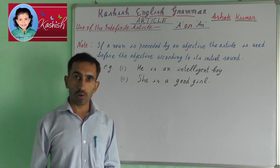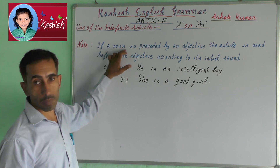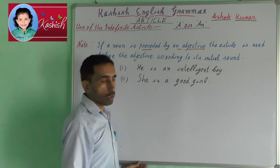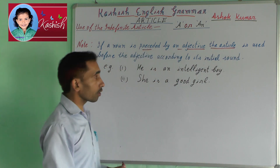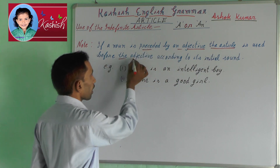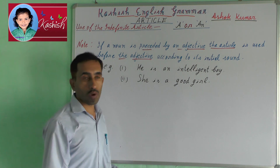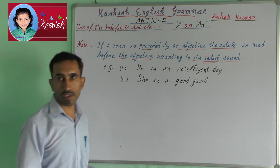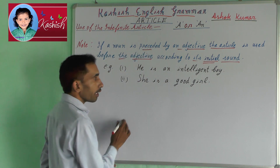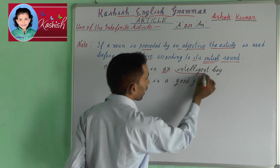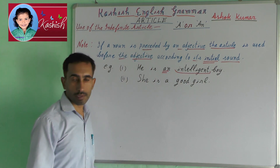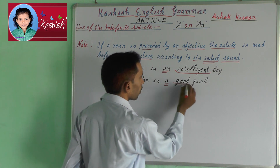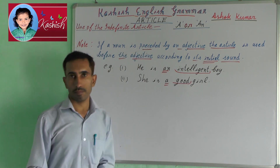Note: if a noun is preceded by an adjective, the article is used before the adjective according to its initial sound. For example: he is an intelligent boy; she is a good girl.